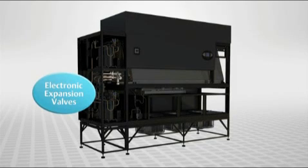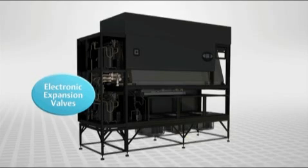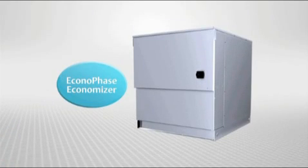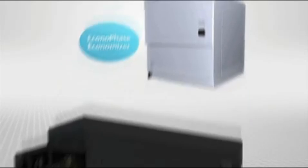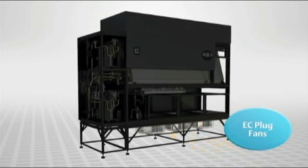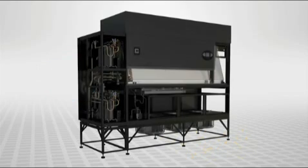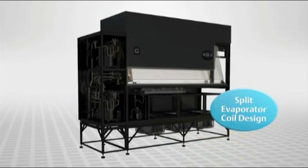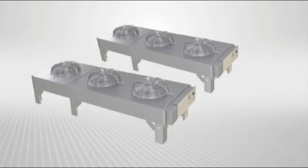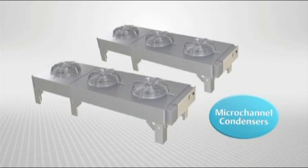Electronic expansion valves improve cooling precision. The Econiphase Economizer increases efficiency using lower ambient outside temperatures. EC plug fans operate at variable speeds for more efficient air delivery. Tandem digital scroll compressors dynamically match the load, saving energy. A split evaporator coil provides multiple circuits resulting in reduced energy costs, and micro-channel condensers contribute to energy savings and lower sound levels.